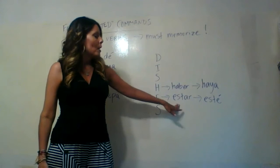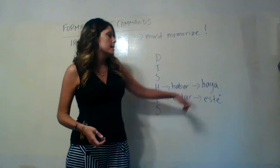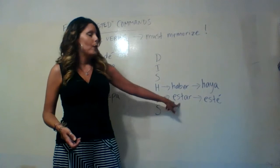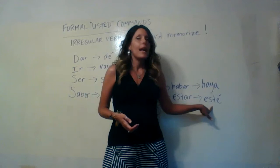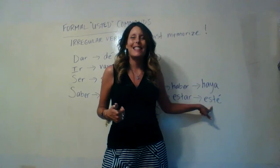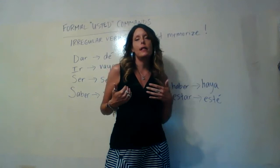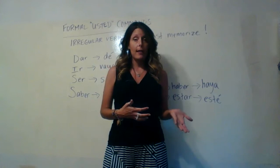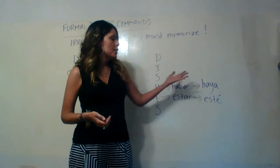The E stands for the verb estar, because both ser and estar are irregular formal usted commands. Estar is spelled E-S-T-E with an accent mark on that last E, pronounced esté. So if I wanted to say 'be here when I get home' — because estar is 'to be' for more temporary things — I would say esté, with an accent mark over that E.